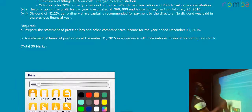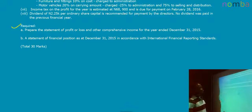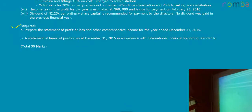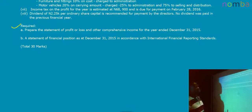The question is asking us to prepare a statement of profit or loss and other comprehensive income for the year ended December 31st, 2015. Part B is asking us to prepare a statement of financial position as at December 31st, 2015, in accordance with International Financial Reporting Standards.